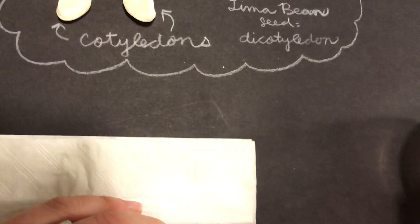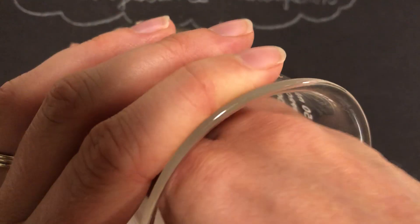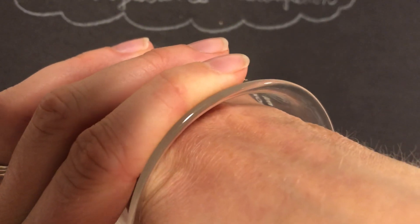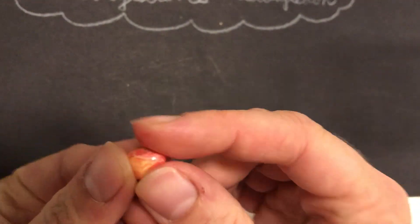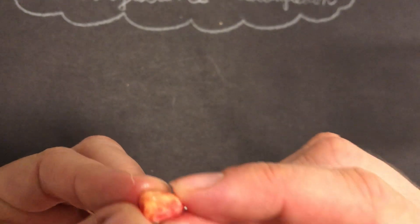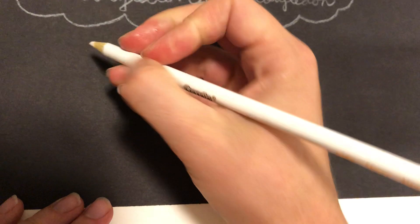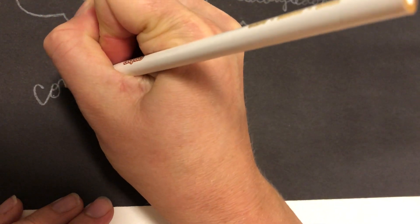Let's go on to another one of our seeds. These seeds, for some reason, were dyed red. This is the seed of a corn plant. So I'm going to write that down — corn seed.